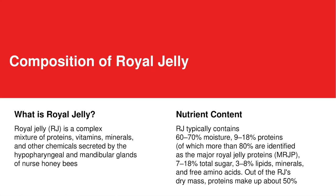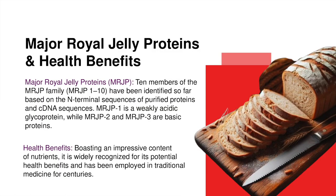Royal jelly typically contains 60 to 70 percent moisture, 9 to 18 percent proteins — of which more than 80 percent are identified as major royal jelly proteins — 7 to 18 percent total sugar, 3 to 8 percent lipids, minerals, and free amino acids. Of the royal jelly's dry mass, proteins make up about 50 percent.